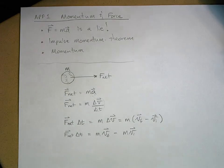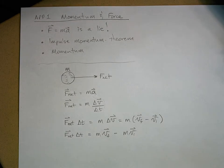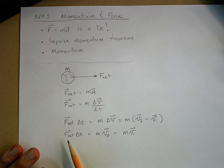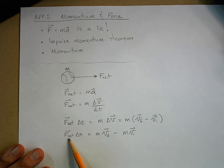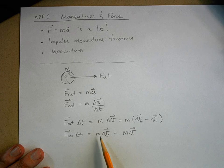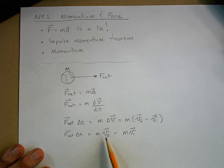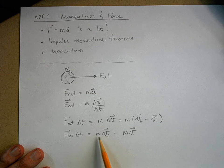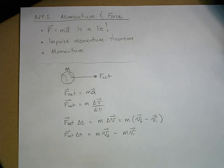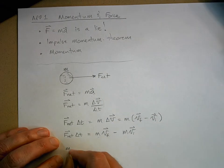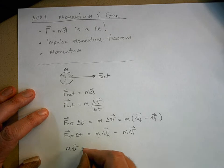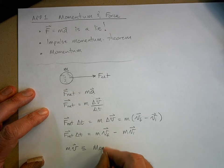Here's where it gets interesting. There's some kind of new quantity here to think about. If I apply a net force to an object for a certain period of time - force times time - what I get is a change in this quantity: the product of mass times velocity. This product of mass times velocity turns out to be really important, so we have a name for it. Mass times velocity by definition is called momentum.